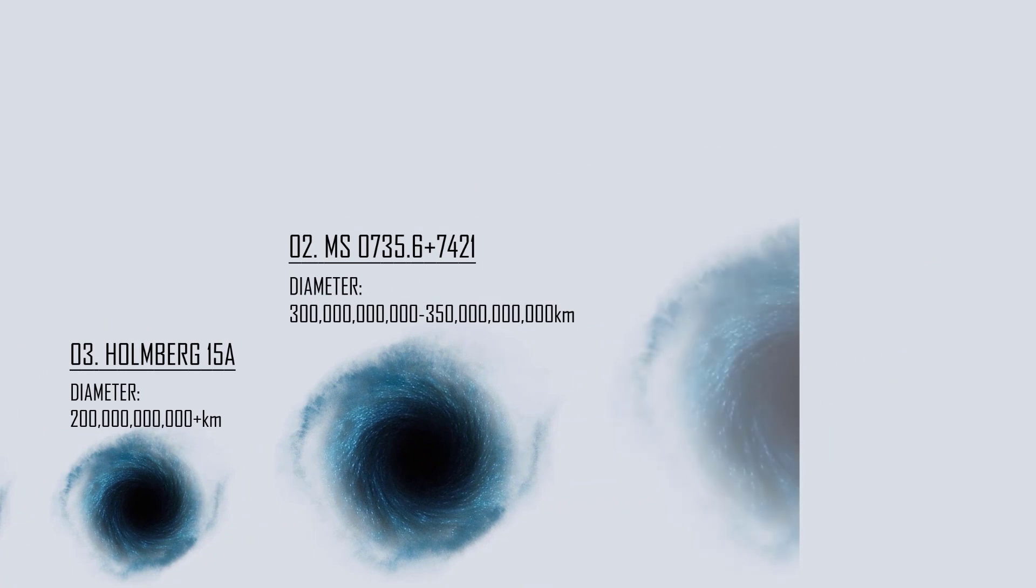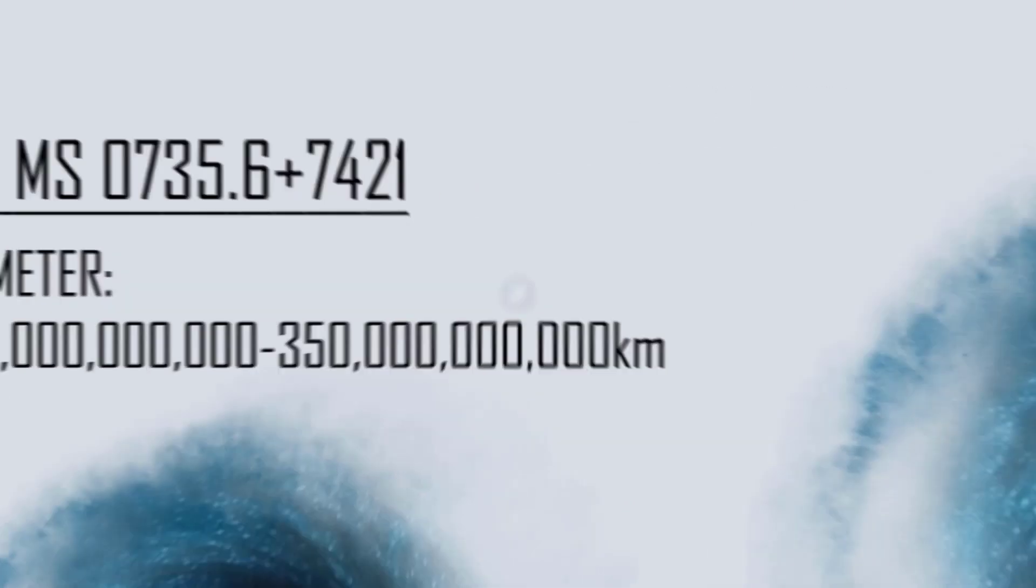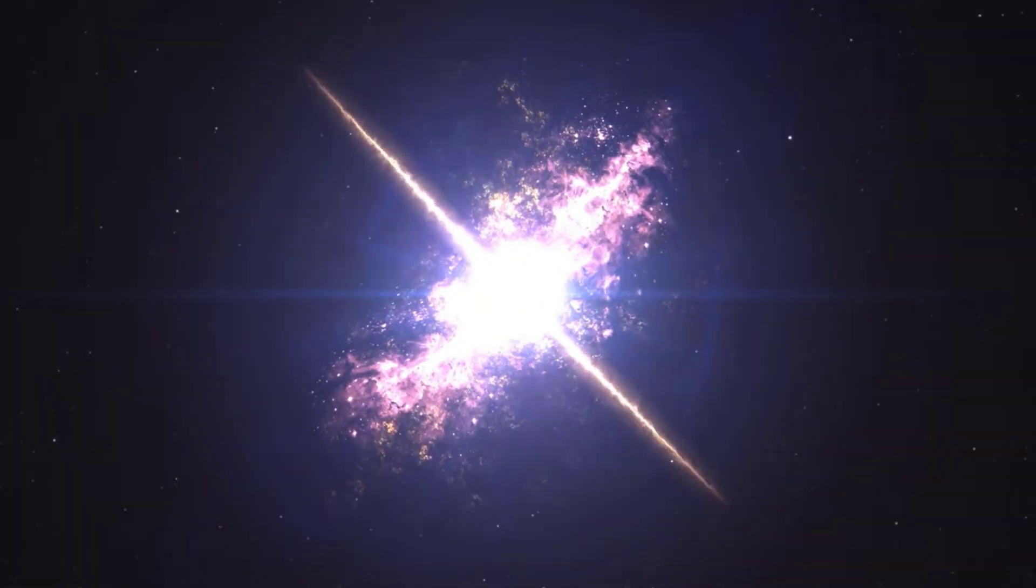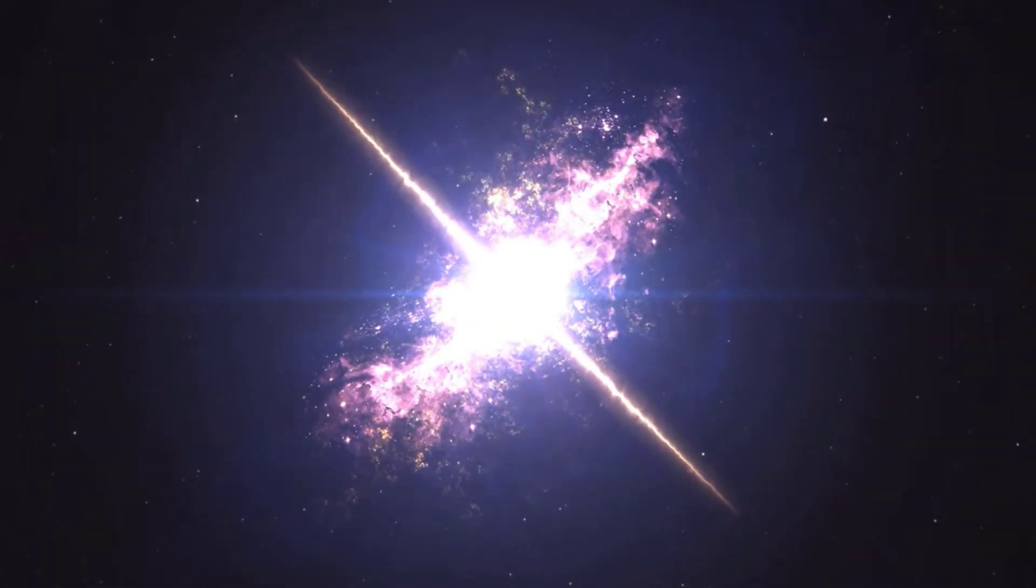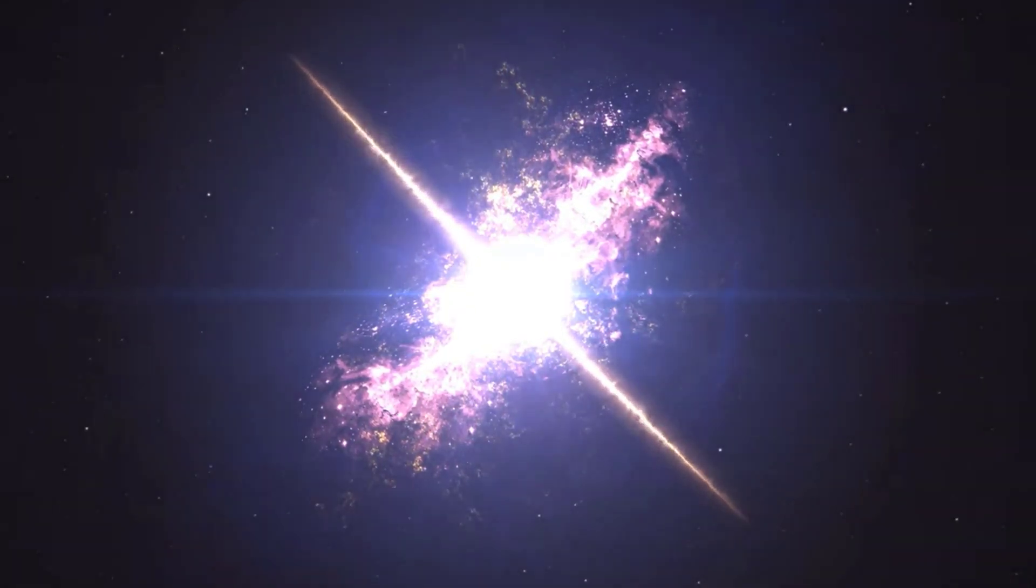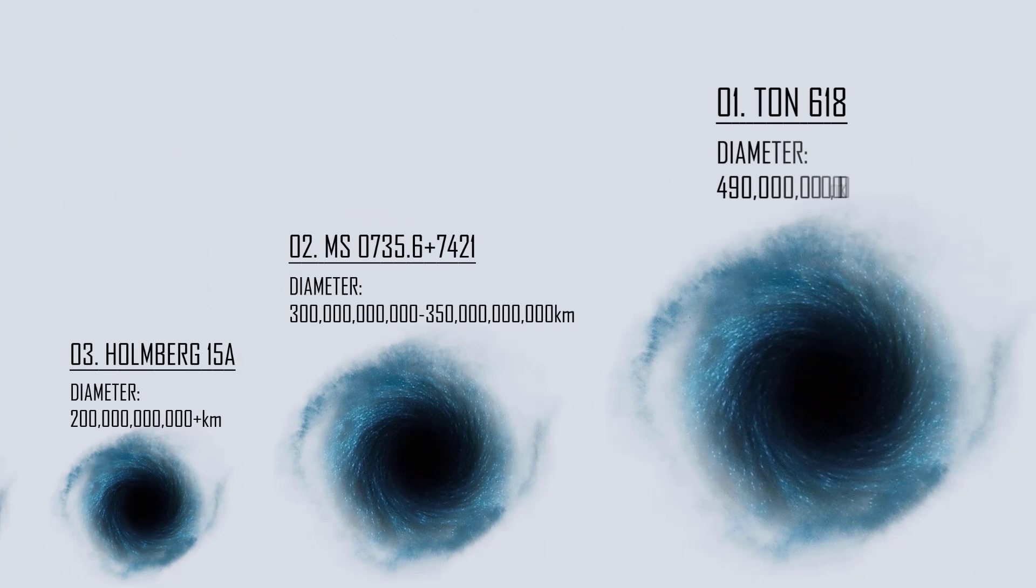Number 1: Ton 618. Ton 618 is a hyperluminous, broad absorption line, radio-loud quasar located approximately 18.2 billion light-years from Earth. It possesses one of the most massive black holes, an ultra-massive one, the biggest ever found, with a mass of 66 billion solar masses. Its diameter is around 490 billion kilometers, or more than 49 times the orbit of Pluto around the Sun.